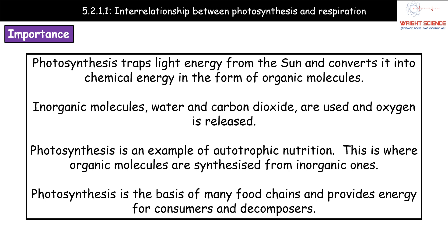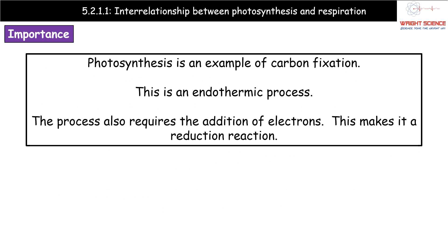Going back to key stage three, we know that photosynthesis is the basis of many food chains and therefore provides energy in the form of various chemical compounds for consumers and, longer term, for the decomposers. Another way we can describe photosynthesis is as an example of carbon fixation — a process where carbon dioxide is converted into sugars. We take inorganic carbon in the form of carbon dioxide and convert it into organic molecules, in this case sugars.